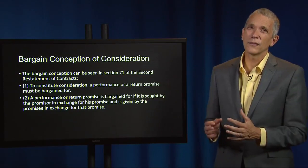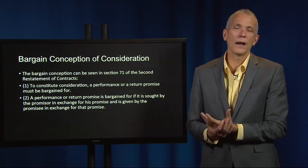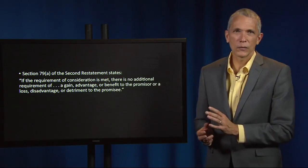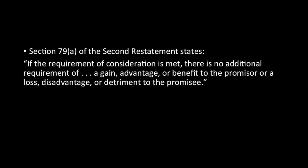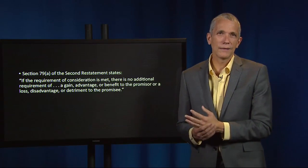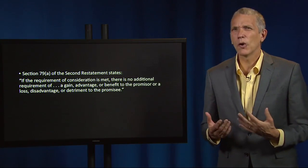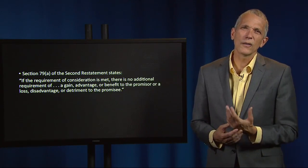That said, because contract law is a product of judicial decisions, it has many authors and old rules die hard. Although the bargained-for theory is the dominant approach, the benefit and detriment tests still figure into many courts' holdings. Section 79 of the 2nd Restatement states that if the requirement of consideration is met, there is no additional requirement of a gain, advantage, or benefit to the promisor, or of a loss, disadvantage, or detriment to the promisee. Comment B suggests it's more realistic to say simply that there's no requirement of detriment anymore.